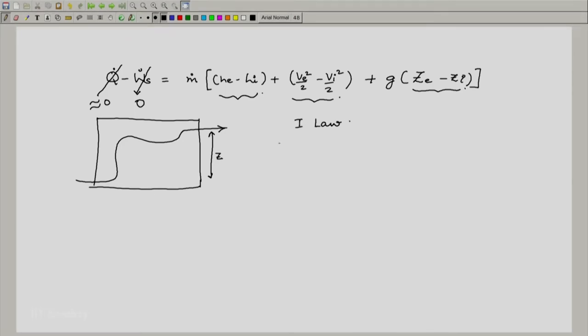We get h_i plus v_i squared by 2 plus g z_i equals h_e plus v_e squared by 2 plus g z_e. So this is what we get from this equation.